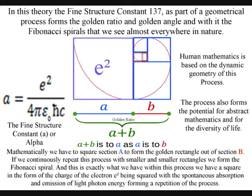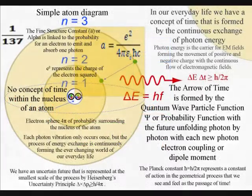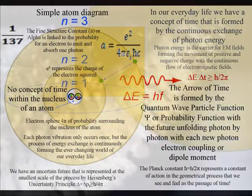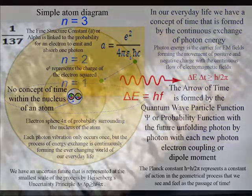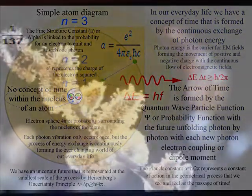And this is exactly what we have within this process. We have a square in the form of the charge of the electron being squared with the spontaneous absorption and emission of light photon energy forming a repetition of the process.